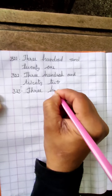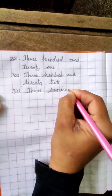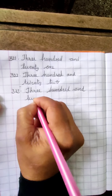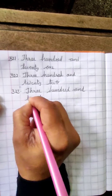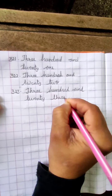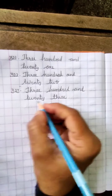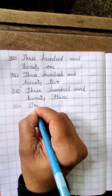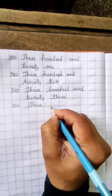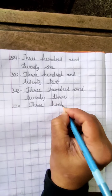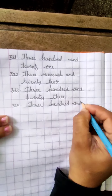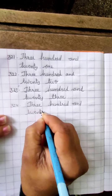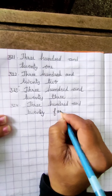THREE HUNDRED — T-H-R-E-E, H-U-N-D-R-E-D, 100 — AND T-W-E-N-T-Y T-H-R-E-E, 23. Three hundred and twenty-three, 323. THREE HUNDRED AND T-W-E-N-T-Y F-O-U-R, 24. Three hundred and twenty-four, 324.